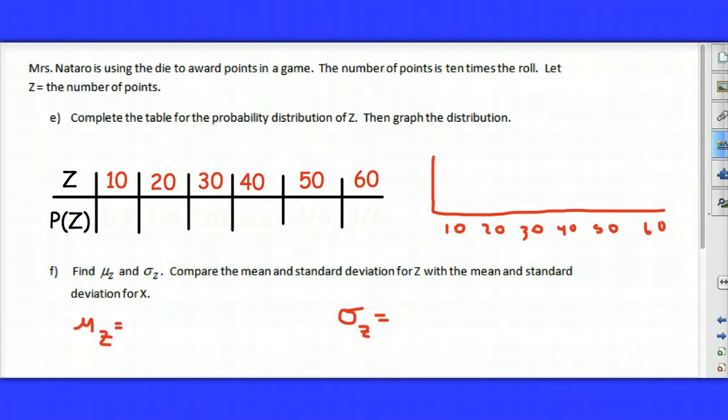Let's take a look at what happens now when we multiply every value in a probability distribution by a constant. Here, let's say I'm using a die to reward points in a game once again. Let's say z is the number of points. I'm going to have the number of points be 10 times what is rolled. So instead of my values being 1, 2, 3, 4, 5, and 6 for my random variable, now they're